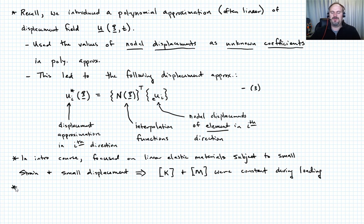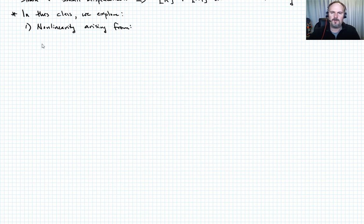In the general case, that's not always true. K and M may be variable, dependent on U, with nonlinear components or time dependent. In this class, we'll explore more complex cases. Number one, nonlinearity arising from boundary conditions. An easy example is contact - a boundary condition that may or may not be engaged.